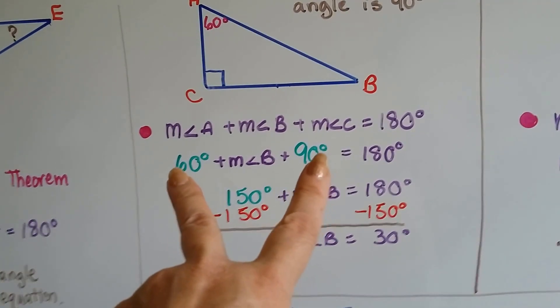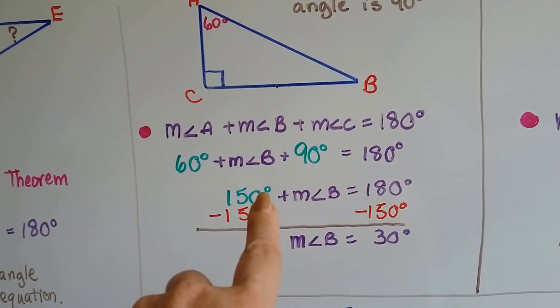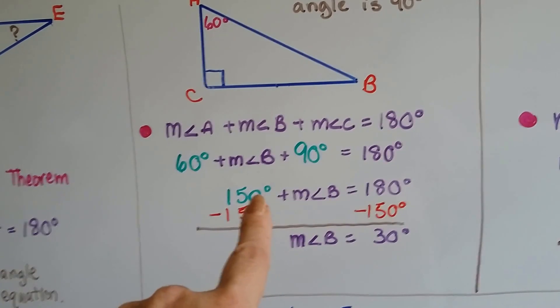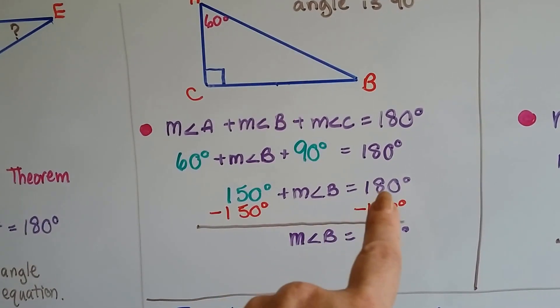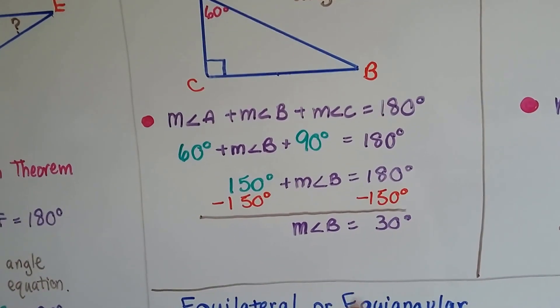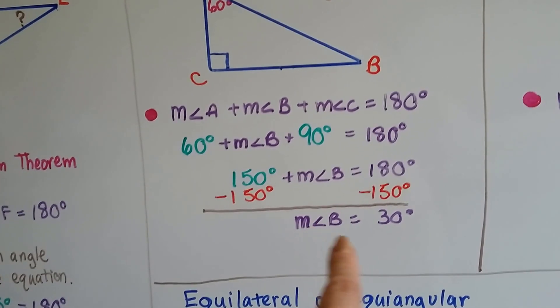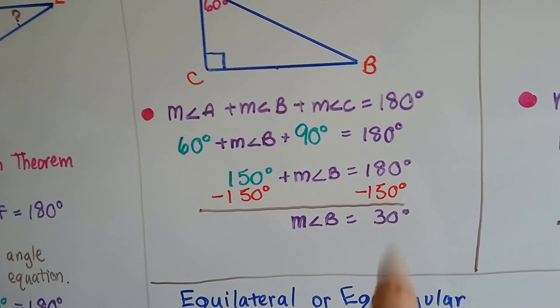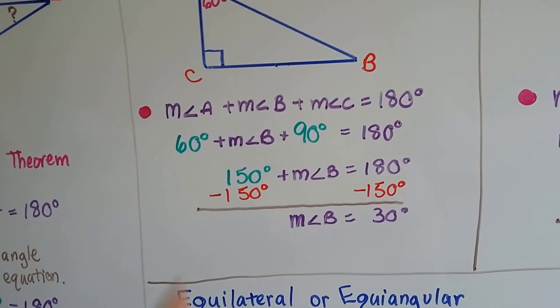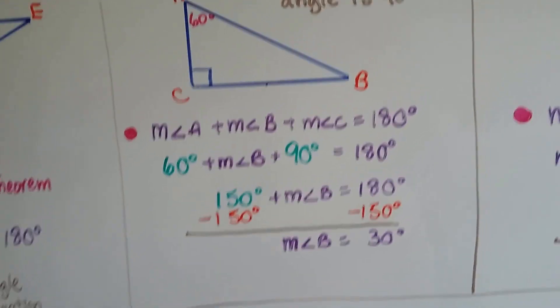We add these two together, combine like terms and get 150, and now 150 degrees plus the measure of angle B equals 180 degrees. We subtract the 150 from both sides to isolate the measure of angle B, and 180 minus 150 is 30 degrees. That makes zero pairs.